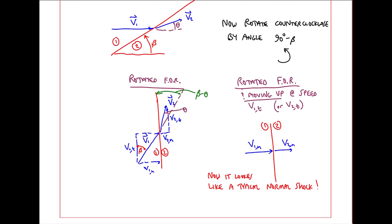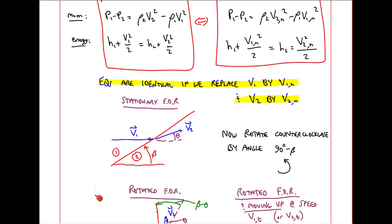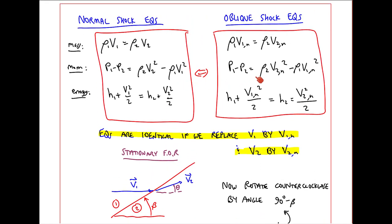Now what do we see? Now it looks like a typical normal shock from one to two, with some flow coming in and some flow coming out. So imagine that you're a camera moving up at this tangential speed V1T. This is what you would see. You would see exactly a typical normal shock. You wouldn't see any tangential speed, since you're moving at that same speed. So it's no wonder that these equations are identical if we replace these speeds with the normal components.